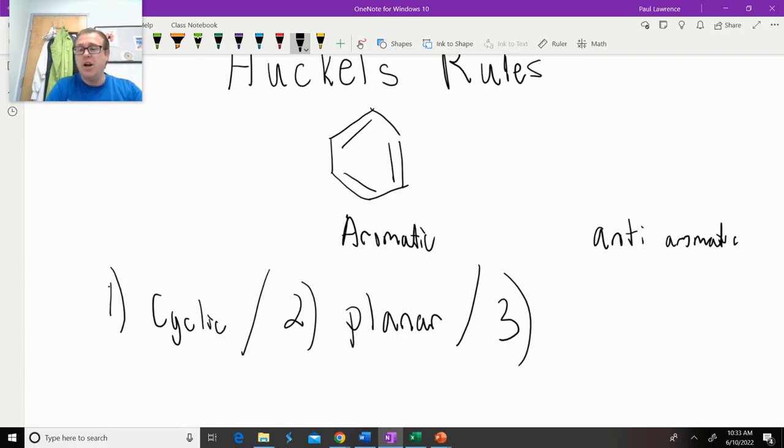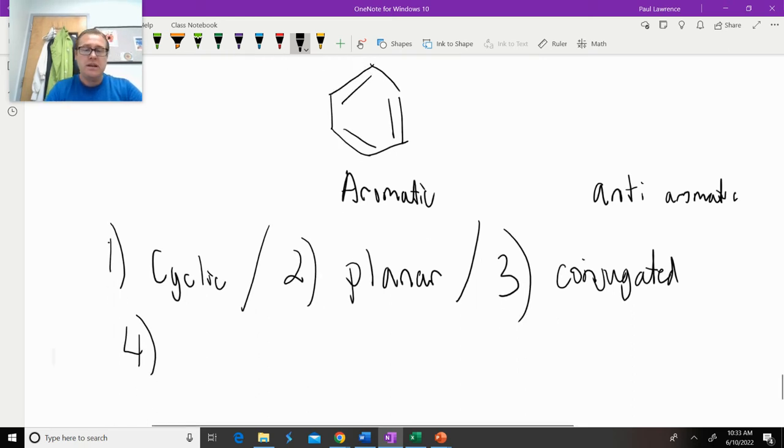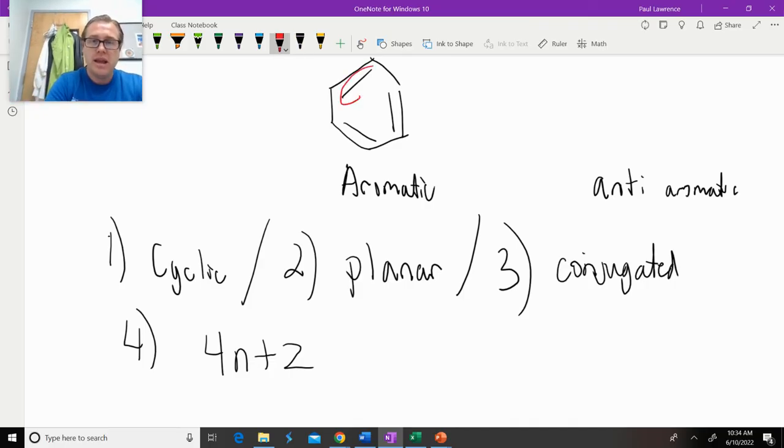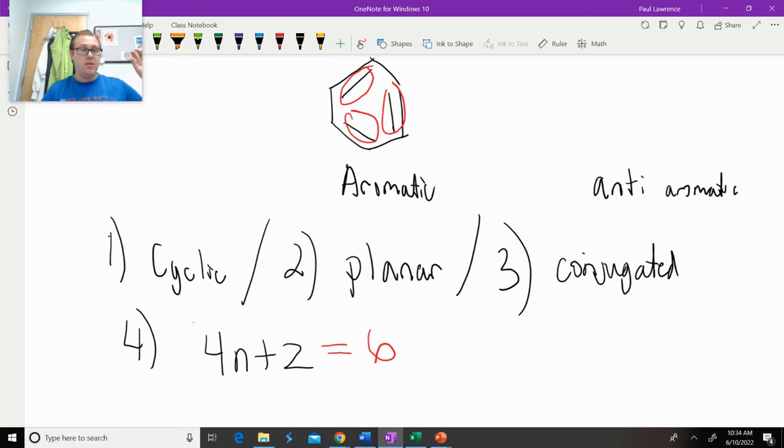The third rule says it needs to be conjugated completely. We see that in benzene. It goes double, single, double, single. And then the fourth rule is that when you count the pi electrons, it needs to follow this formula: 4n plus 2. Now, what we're going to use this equation for is can we use that equation and make a true statement? First off, we count how many pi electrons we have in our molecule. We have 2, 4, 6. So we have a total of 6 pi electrons.